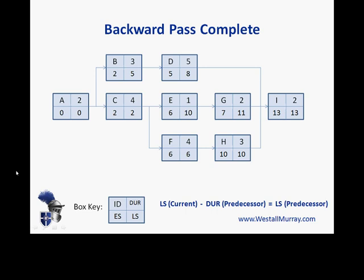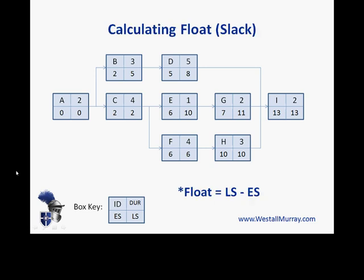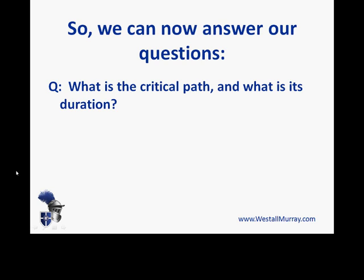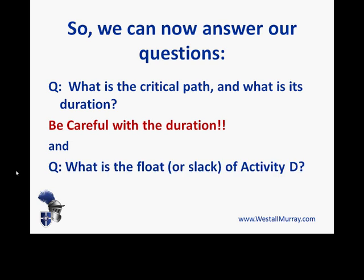The backward pass is complete, which means we can now calculate float or slack. The formula is: float equals late start minus early start. Subtracting through, for D the late start is 8 minus early start 5, equals 3. Note that some tasks have 0 float — those are the critical path tasks. Having a float of 0 means that the task is on the critical path. So we can answer our question: what is the critical path and what is its duration? Be careful with the duration.